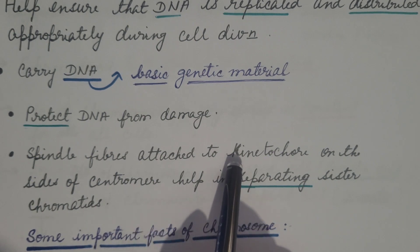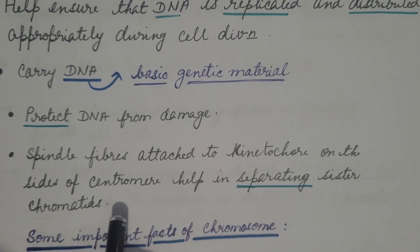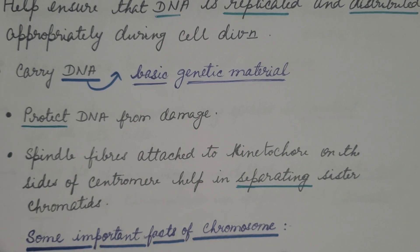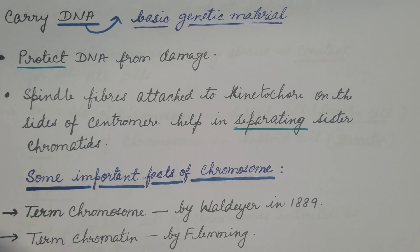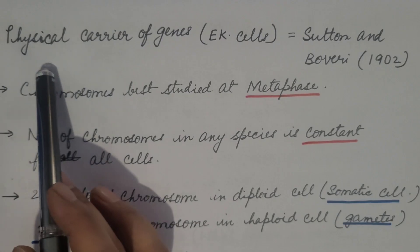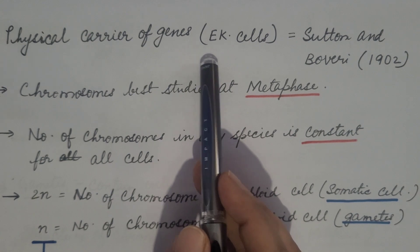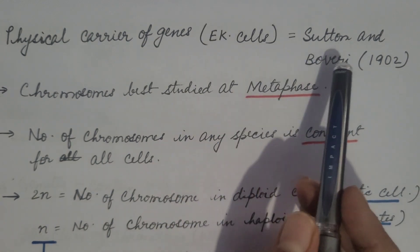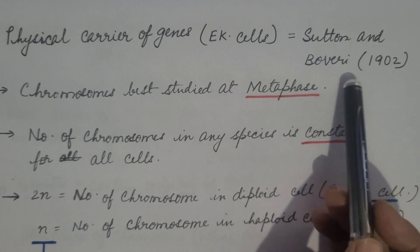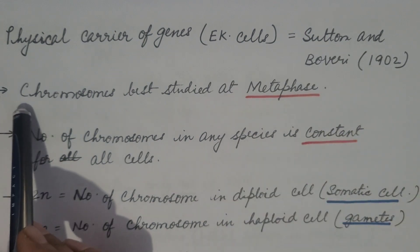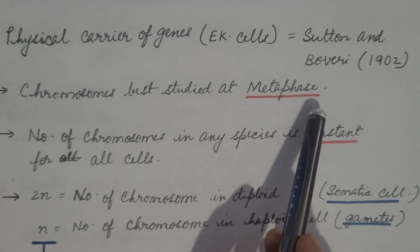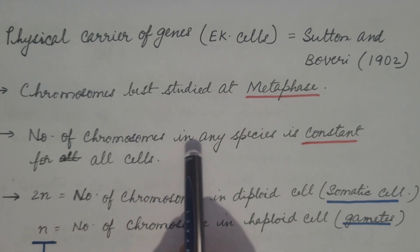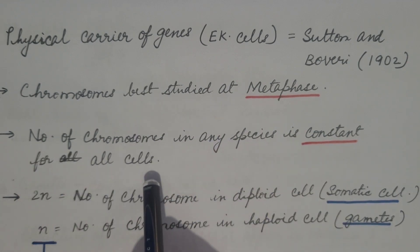Some important facts: the term 'chromosome' was given by Waldeyer in 1889, and 'chromatin' was given by Fleming. Chromosomes are the physical carriers of genes in eukaryotic cells, as explained by Sutton and Boveri in 1902. Chromosomes are best studied at metaphase, when they are highly condensed. The number of chromosomes in any species is constant for all cells.